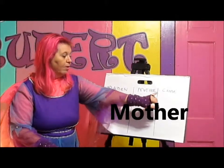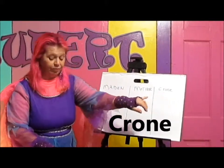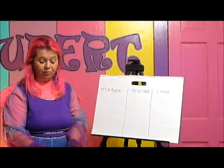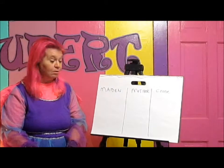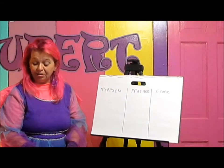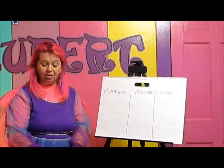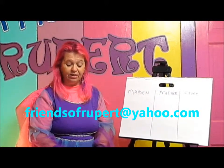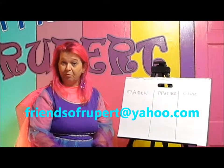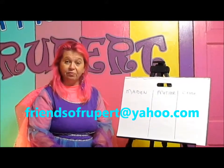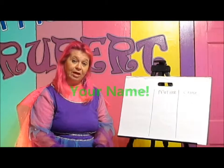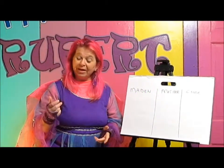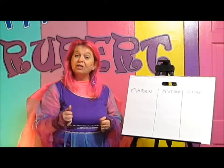So get out a pencil and paper and write down these words across the top: maiden, mother, and crone. Then draw lines down the paper so you can write the clues in the right column. Take your time — you can watch this segment of the show over and over again to get all the clues. Then you can send an email to friendsofRupert@yahoo.com, and if you get all the answers right, I will say your name on a future episode of our show.